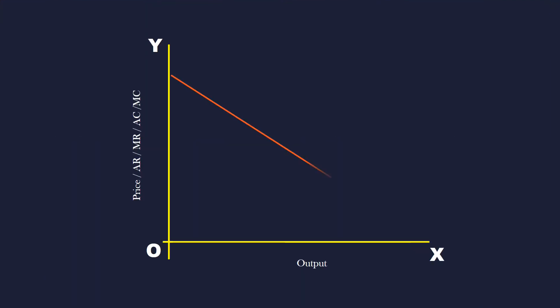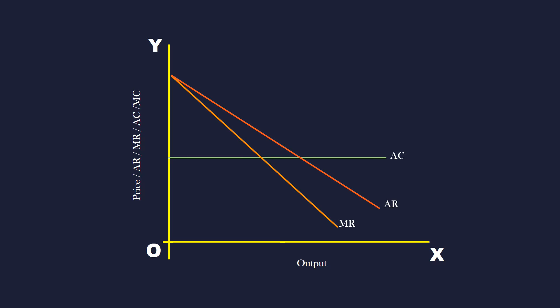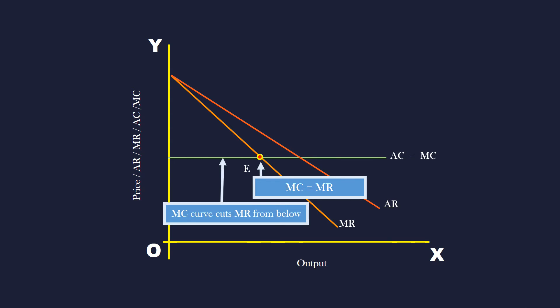Monopoly Firm with Constant Cost. Its revenue curves are AR and MR. When a monopoly firm undergoes constant cost, the firm's average cost curve AC is horizontal to the X-axis, and its marginal cost curve MC coincides with it. The firm is in equilibrium at E, where its marginal cost is equal to marginal revenue. The marginal cost curve cuts the marginal revenue curve from below.